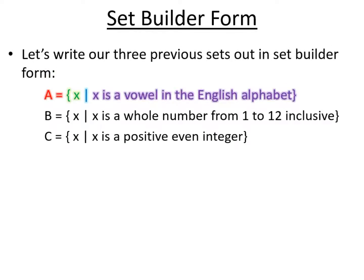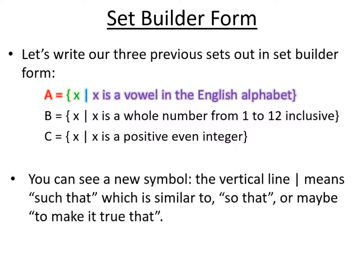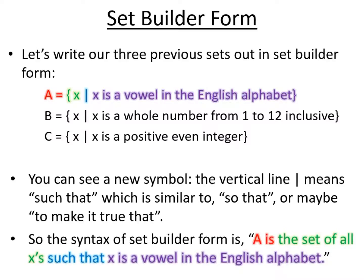Let's look at the previous sets that we looked at. So set A was A-E-I-O-U, and there we see it written out in set builder form along with B and C, the other example sets. So the vertical line which is highlighted in blue on set A means such that, which could be interpreted as so that or making it true that. So the syntax of the expression is to say that set A is the set of all X's such that X is a vowel in the English alphabet. There we've given our condition for X in purple, and we put it in words just to make it clear. X is a vowel in the English alphabet. So when you have something, look at it. Is it a vowel in the English alphabet? If it is, then it's a member of set A.